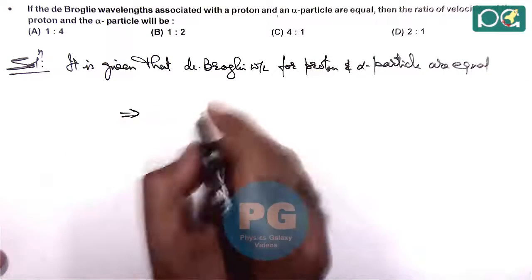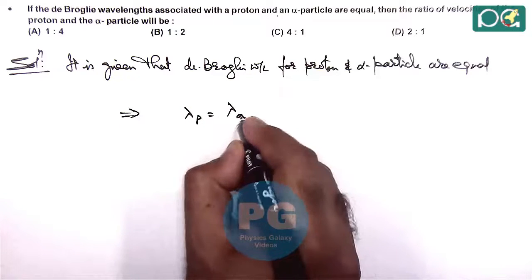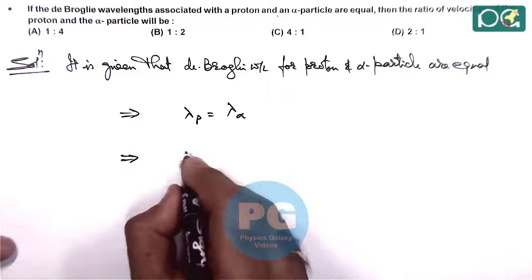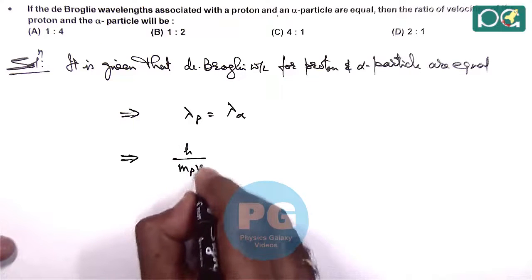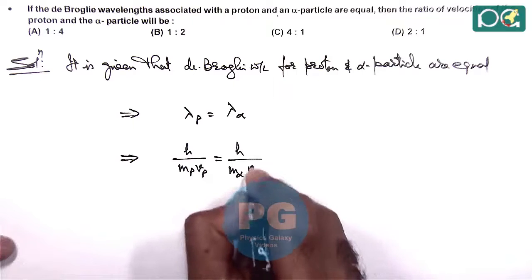This implies λ_p = λ_α. So we can write: de Broglie wavelength for proton is h/(m_p × v_p), and this equals h/(m_α × v_α).